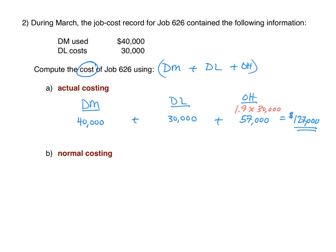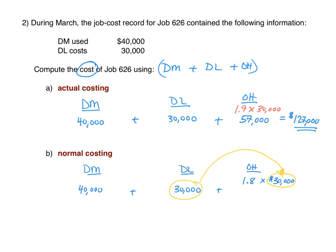Now let's find the cost of Job 626 under normal costing, which uses estimated numbers to apply overhead. Direct materials are still $40,000 and direct labor is still $30,000 — these are direct costs, traceable right back to the job. For overhead, we apply the normal costing rate of 180% (1.8) times direct labor cost of $30,000, giving estimated overhead of $54,000. So the budgeted or estimated cost of Job 626 is $124,000 — very close to what actually happened.